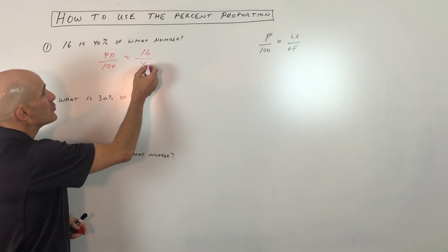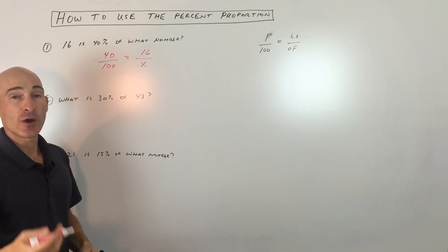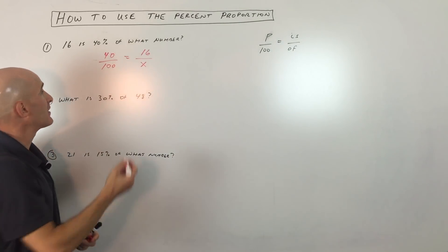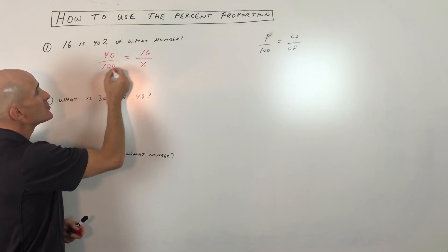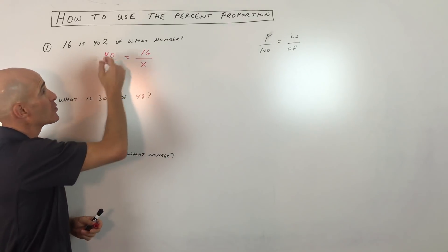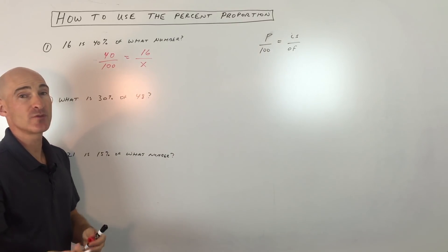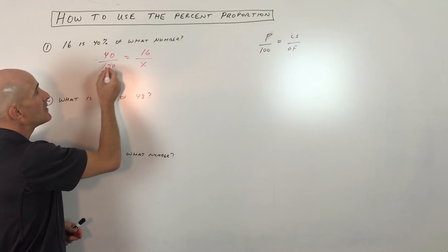So all we have to do is cross-multiply and solve. Now what a lot of teachers will recommend is if you can reduce these fractions first before you cross-multiply, that makes the problem easier. So I'm going to divide the top and bottom by 10. When you divide by 10, this becomes 4, and this becomes 10, which we can reduce further to 2-5ths.